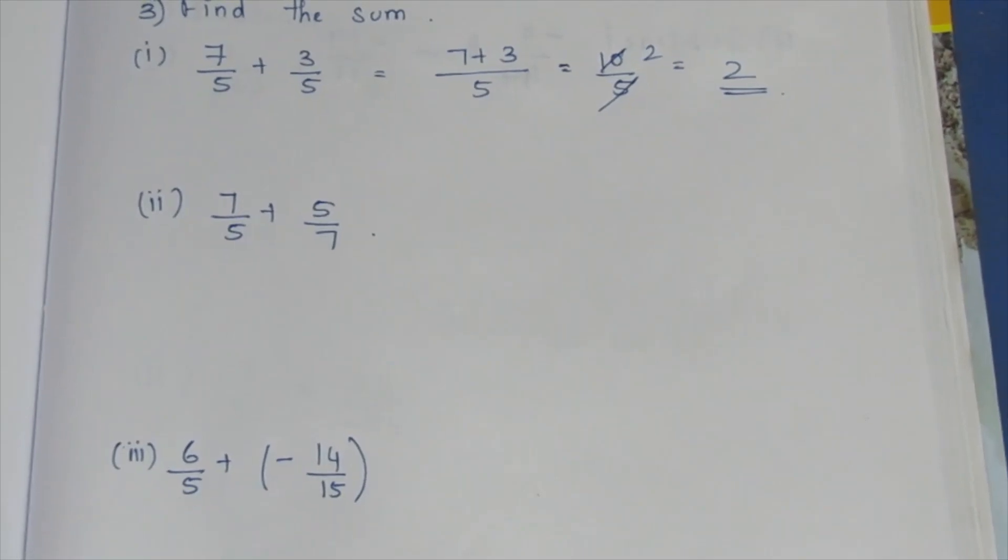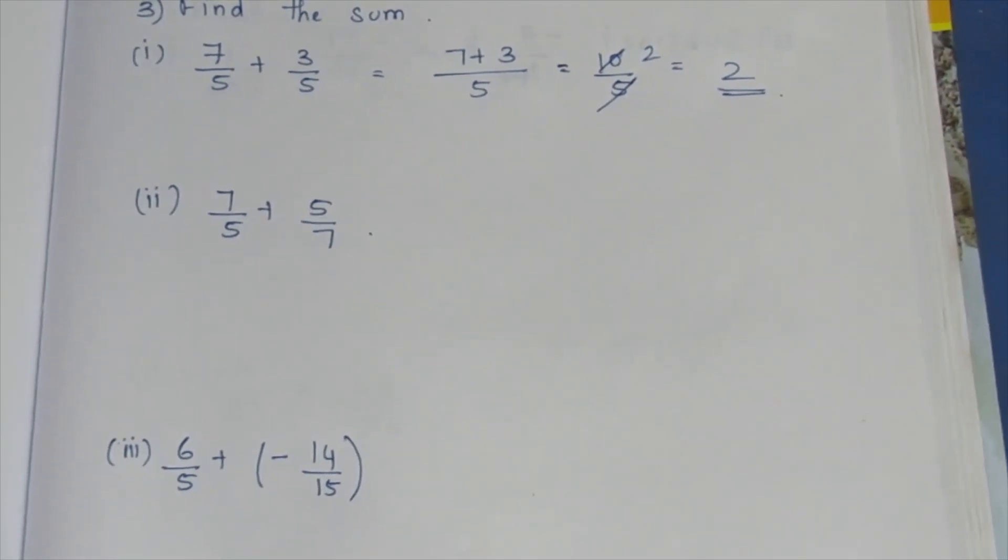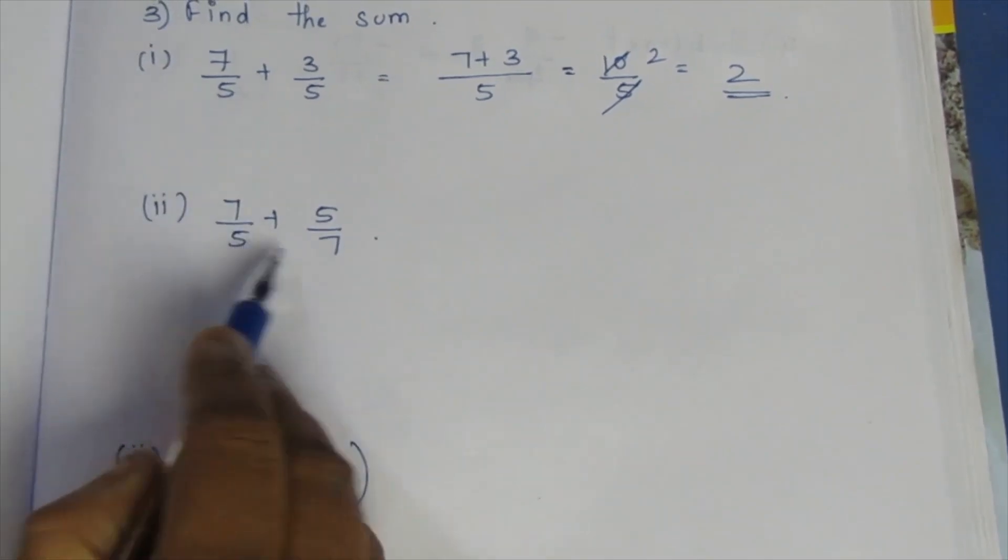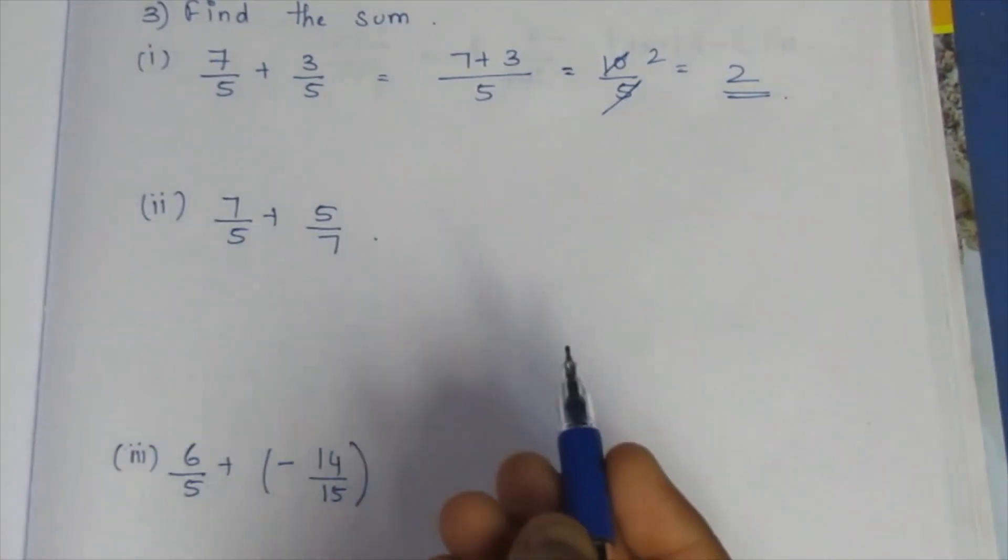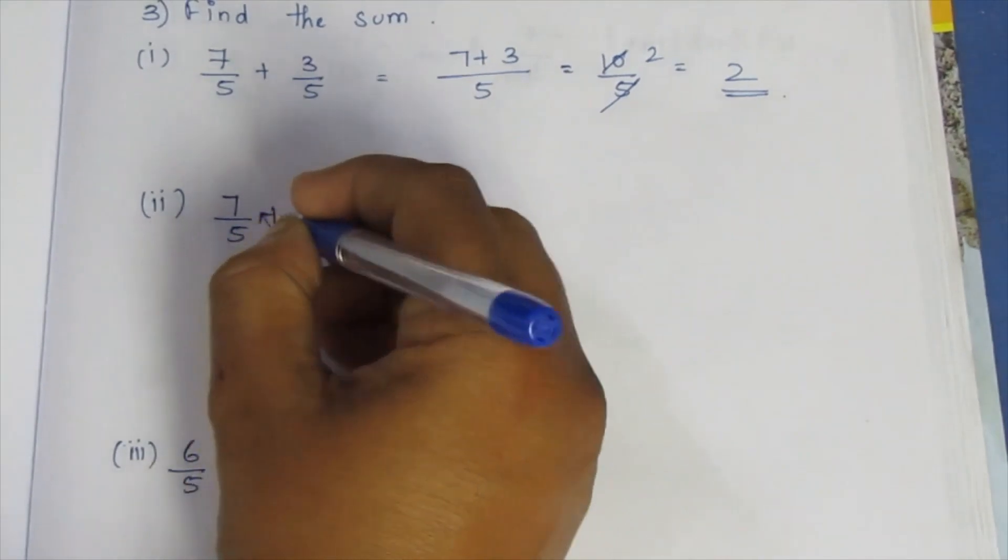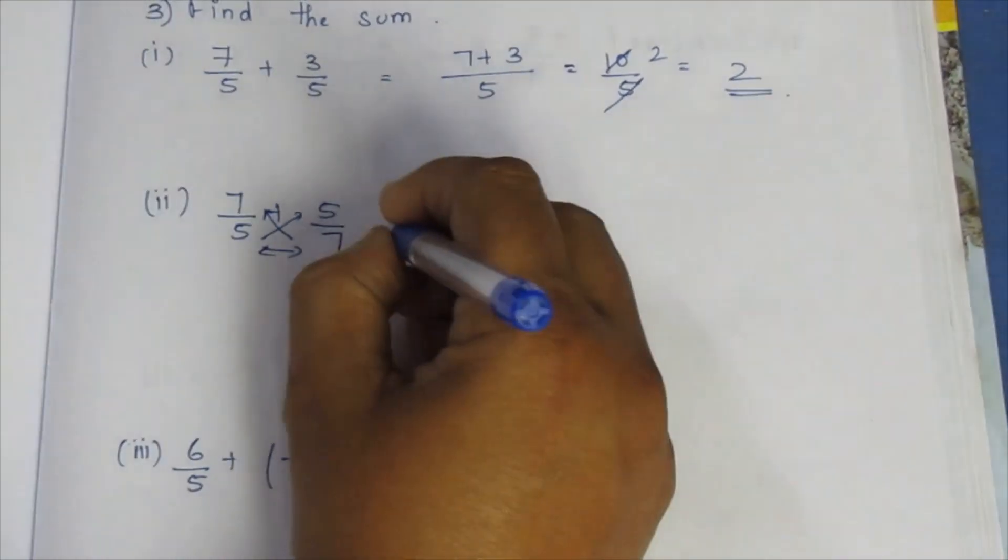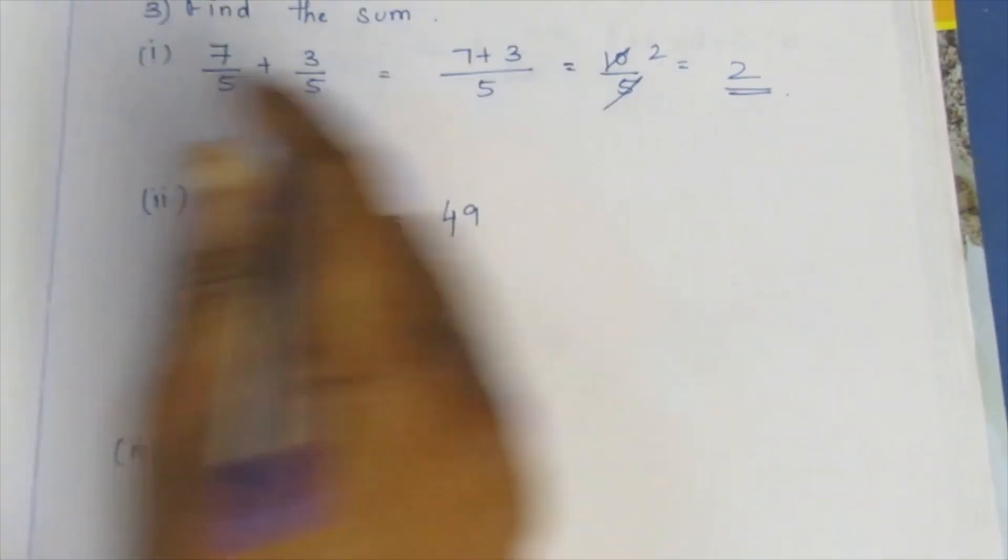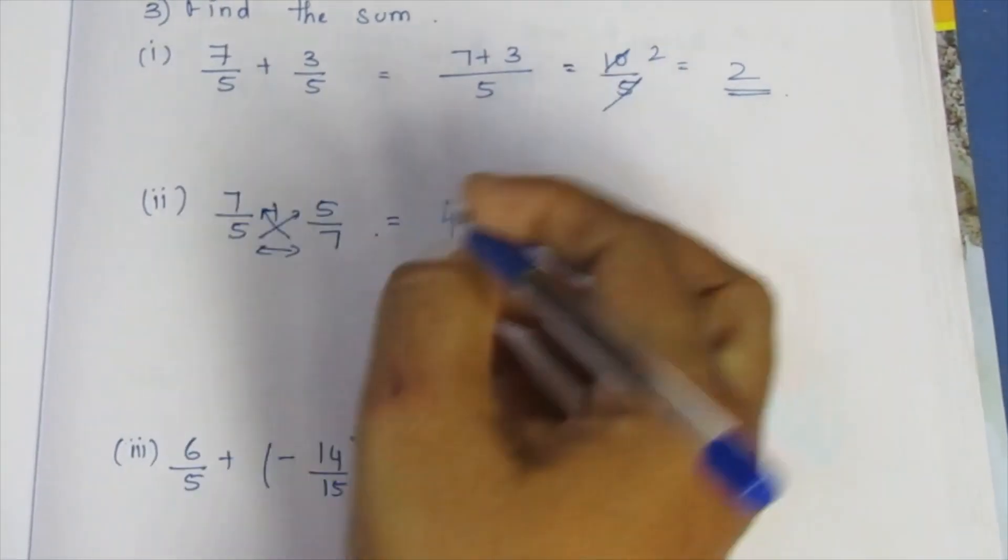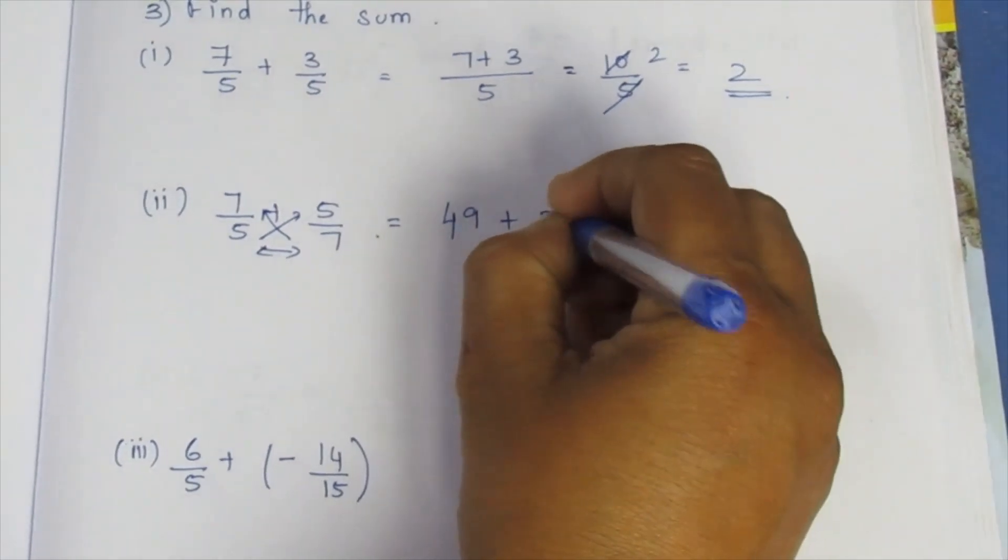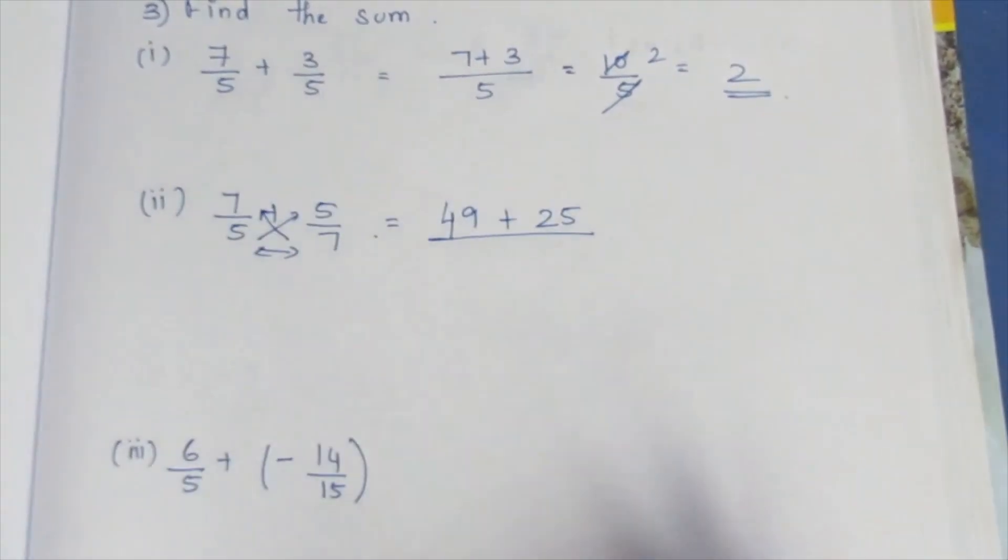Now let's look at the second sum. There is 7 by 5 plus 5 by 7. You have different denominators. The denominator will not be the same. We need to find the LCM. The denominator for 5 and 7, being 35.